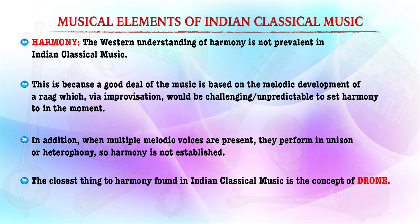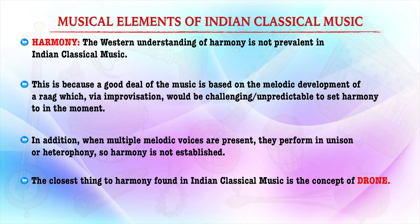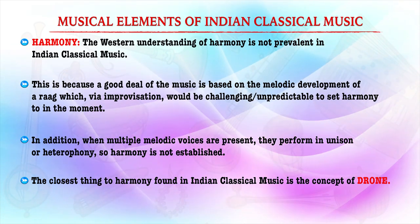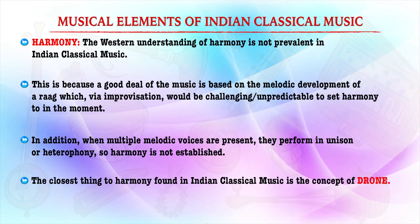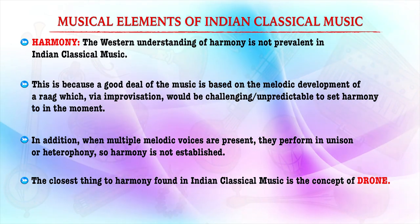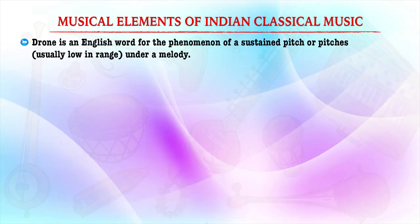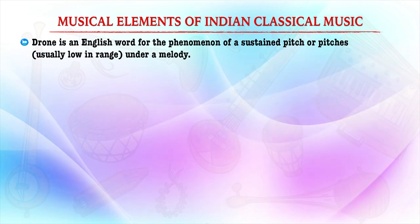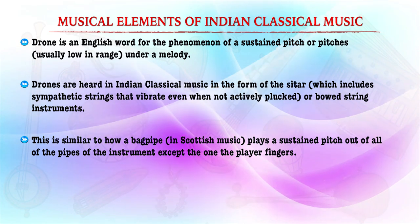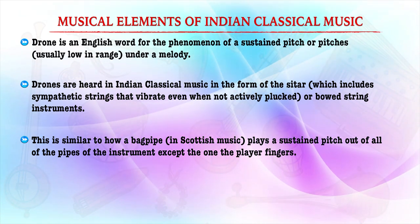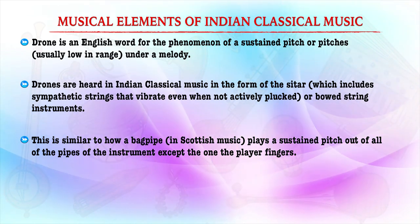Another important part is harmony. This harmony is based on the rasa discussed earlier and it is improvised. A new set of harmony is promoted in which multiple voices perform in unison. As a result, in classical music we have the concept of drone. Drone refers to a sustained pitch under a melody, and drones are heard in Indian classical music in the form of the sitar or other string instruments.